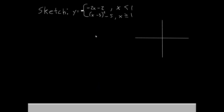This looks like kind of a big mess, but if you look here, we've got two functions — one here and one here. The first function, which I'll call piece a, is negative 2x minus 2. The second one, which I'll call piece b, is x minus 3, the quantity squared, minus 5. Notice that after each function we have a condition: x less than 1 for piece a, and x greater than or equal to 1 for piece b.